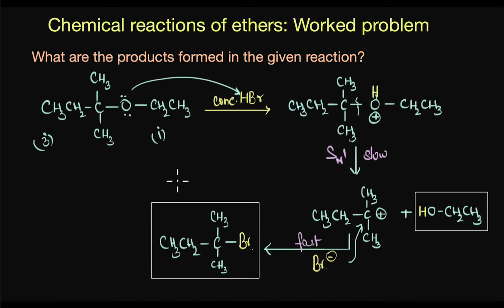So as you can see from these two questions, when we have mixed ethers with two different alkyl groups, and if the alkyl groups are primary or secondary, the reaction proceeds via an SN2 attack. Whereas when one of the alkyl groups is a tertiary group, in that case the second step follows an SN1 mechanism generating a tertiary carbocation. Alright.